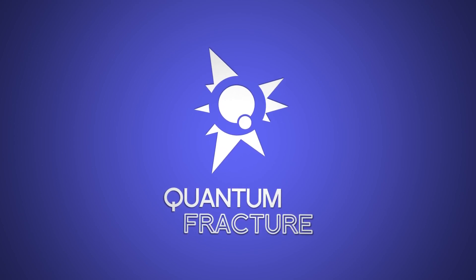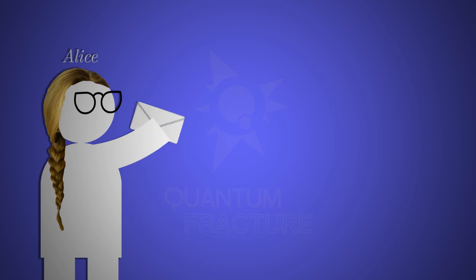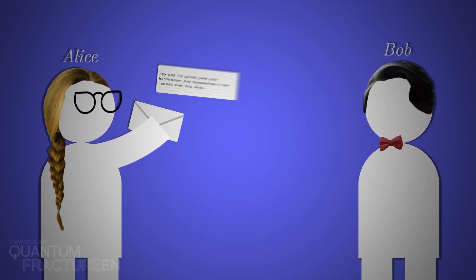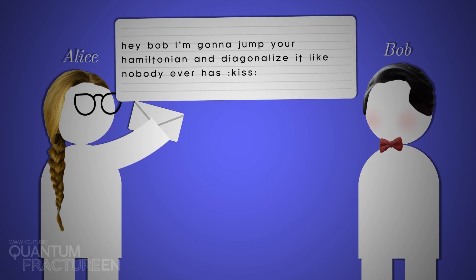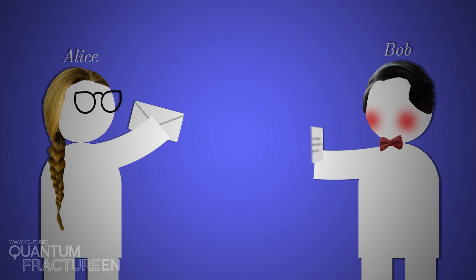Check out this scenario. Person A, let's call her Alice, wants to send a message to person B, whom we'll call Bob. The message, well, let's just say it's kind of personal, something she only wants Bob to read.